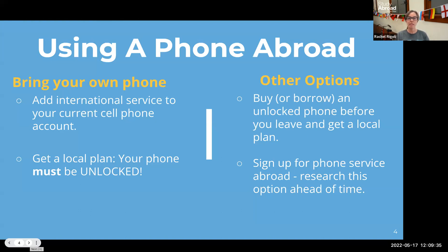If you don't have an unlocked phone, another option is to borrow or buy one. Sometimes a family member or friend has an old phone in a drawer — if it's unlocked, you can just drop in a local SIM card when you go abroad. Or consider buying an unlocked phone before you go; maybe something inexpensive and prepaid that you might find at Target or T-Mobile. Just make sure it's an unlocked phone. You could also sign up for a local service in-country with a phone connected to that service — recommended more for semester or year-long programs than summer.